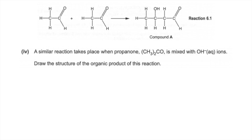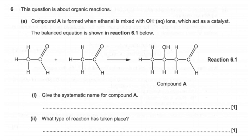The first part of A asks for the systematic name for compound A. We've got an aldehyde group here and an OH group here, so this is an aldehyde with a hydroxy group. Carbon number one is the one with the functional group, which makes the OH carbon number three, so this is called 3-hydroxybutanal.